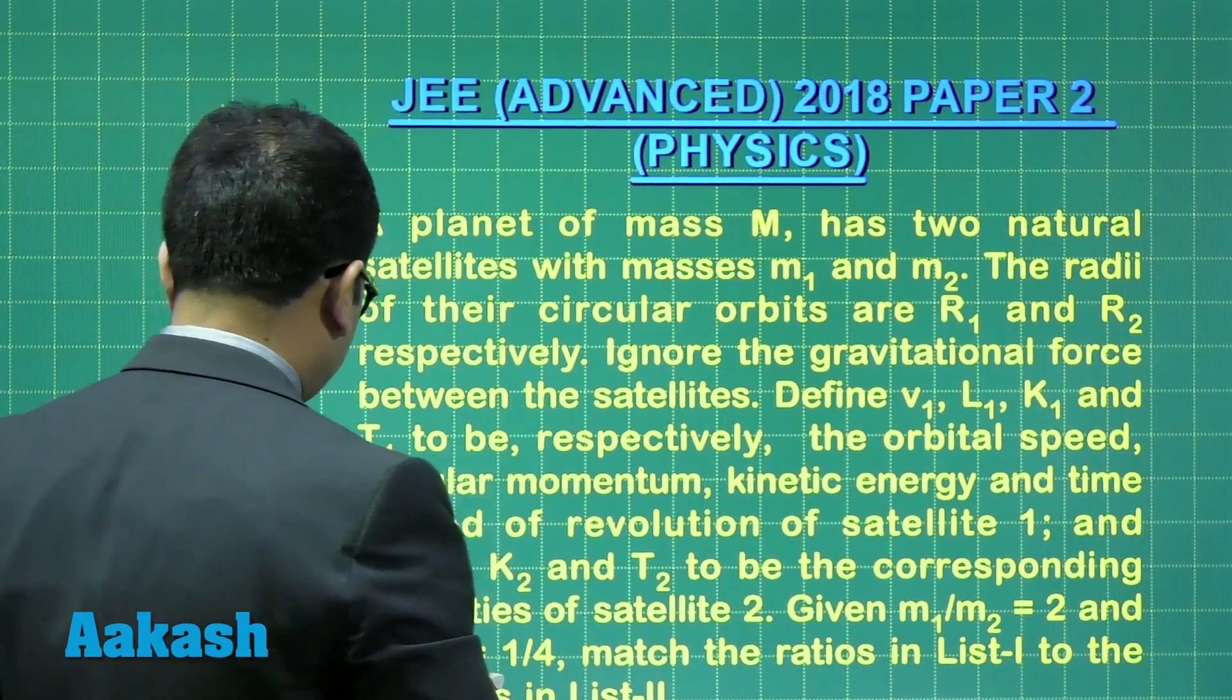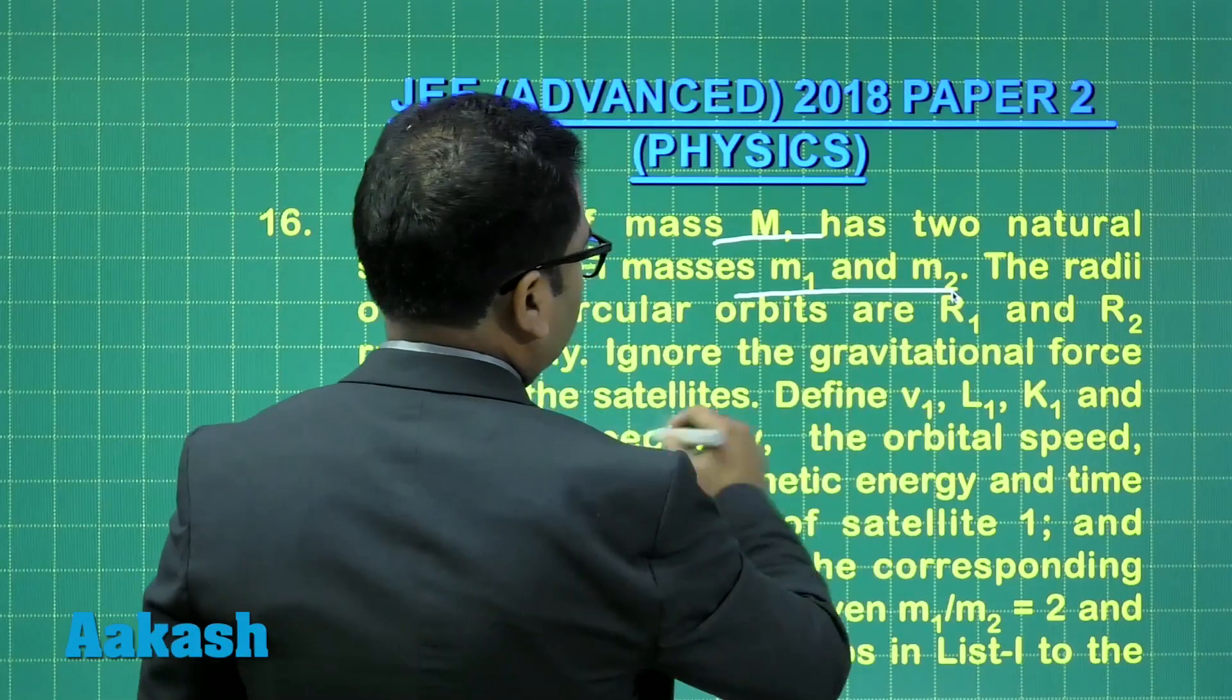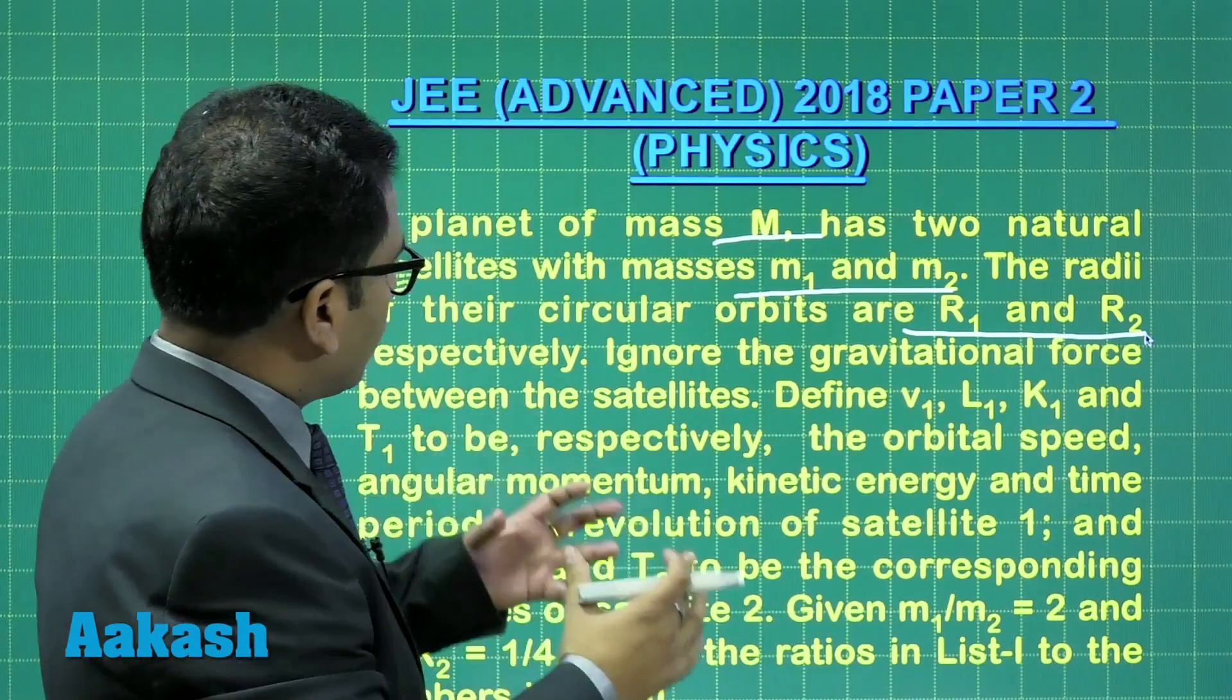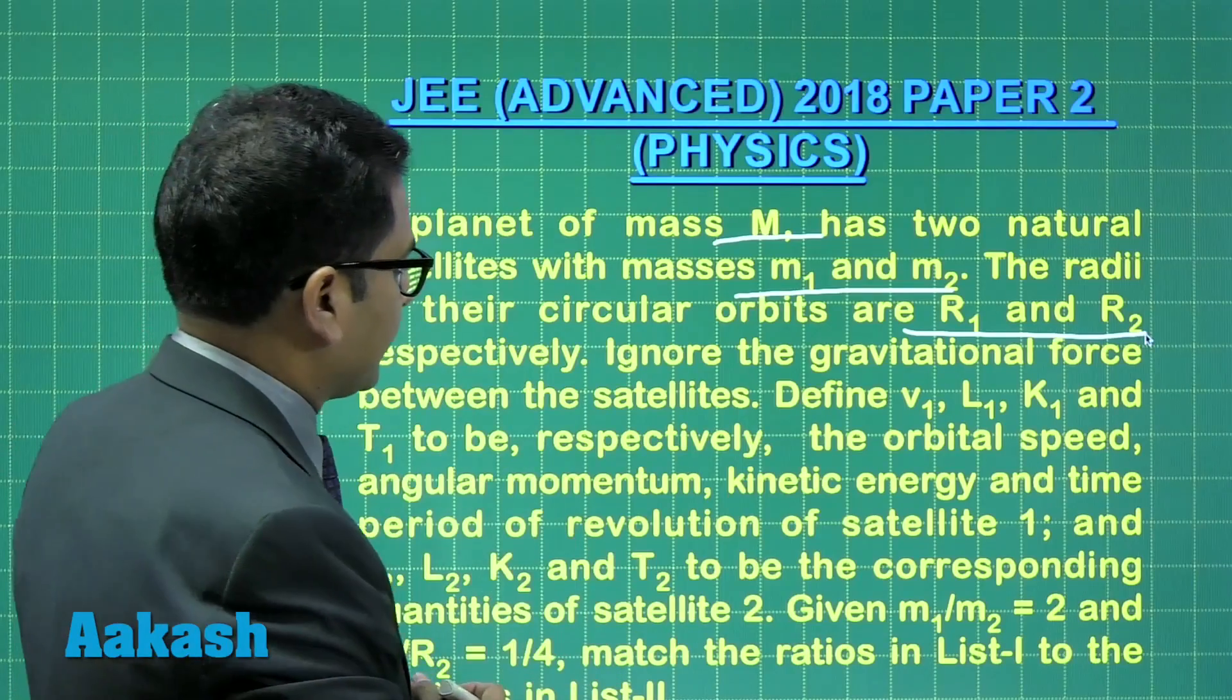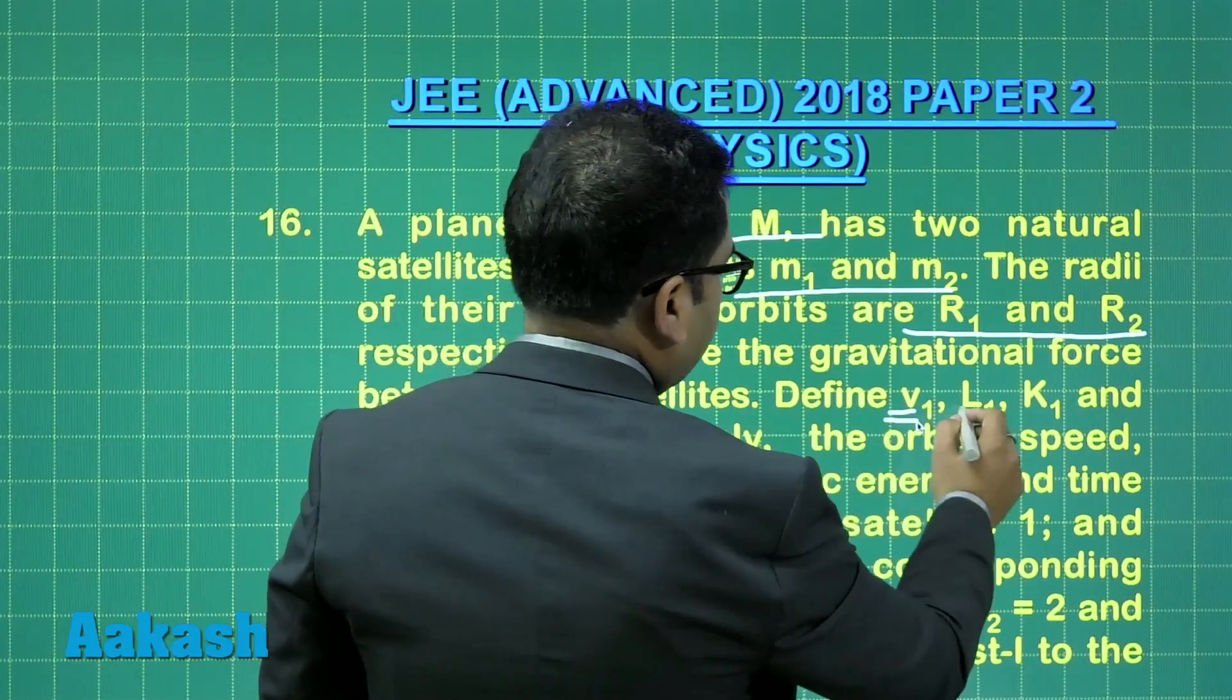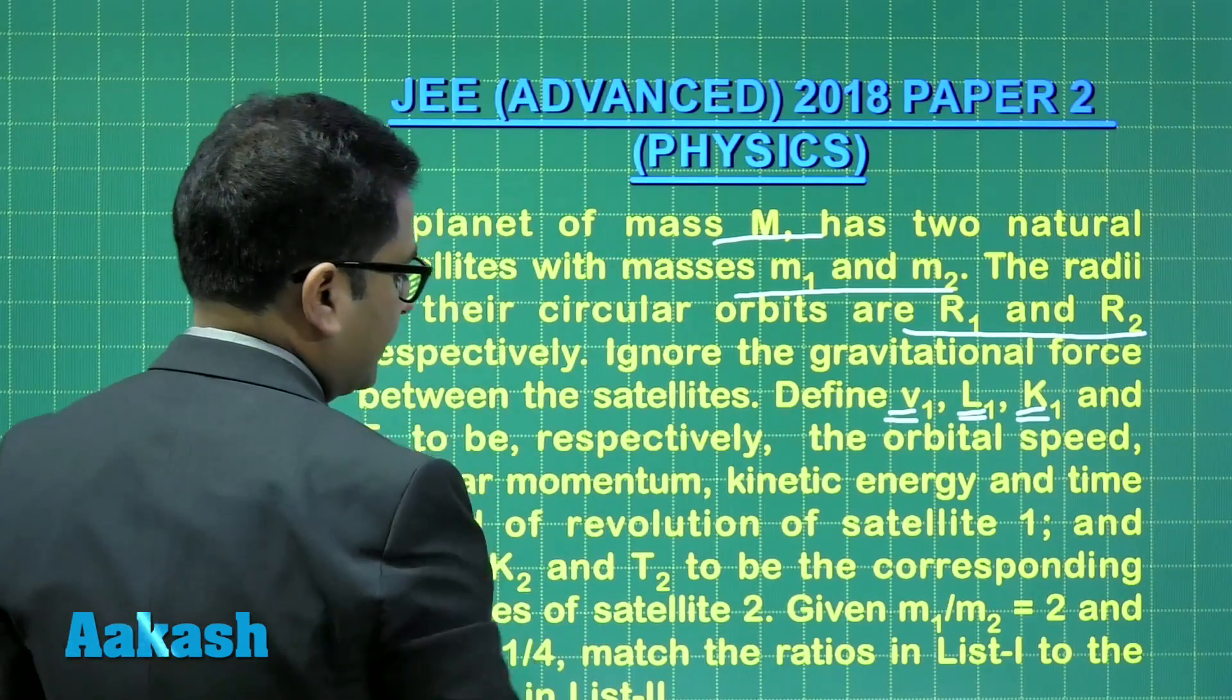A planet of mass M has two natural satellites with masses M1 and M2, and their circular orbit radii are R1 and R2. Ignoring the gravitational force between the satellites, we only consider the force between satellite and planet. V is the orbital speed, L is the angular momentum, K is the kinetic energy, T is the time period.